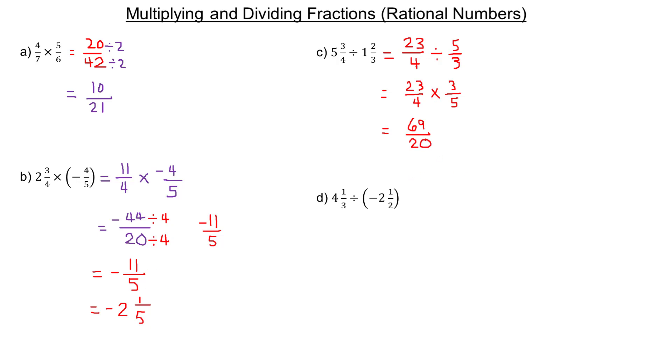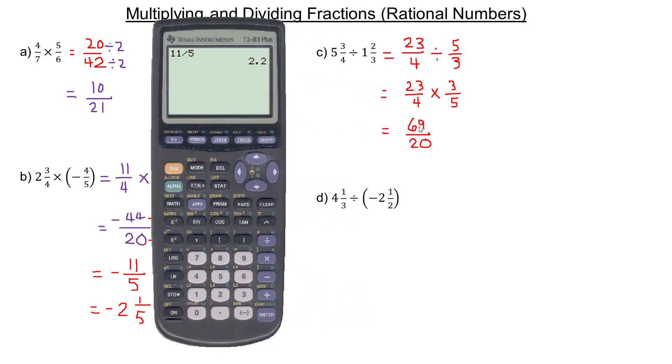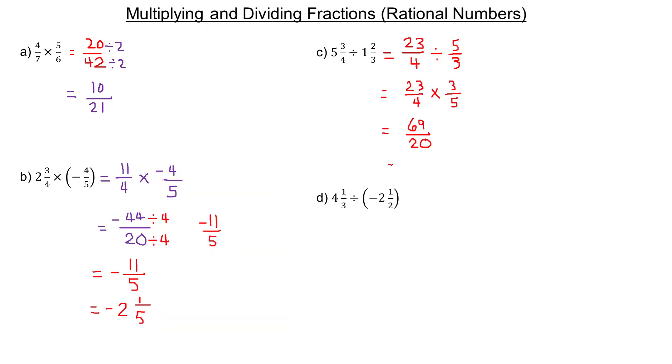That's improper because the numerator is bigger than the denominator. How many times does 20 go into 69? Counting by 20s: 20, 40, 60—so three 20s go into 69. 3 times 20 is 60, and you need 9 more to make 69. So this is 3 and 9/20.